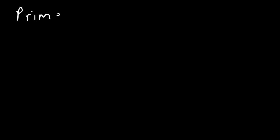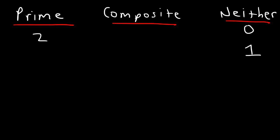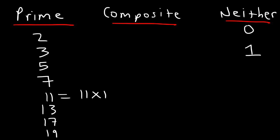Let's make a list of all the prime numbers, composite numbers, and those that are neither. Zero and 1 are neither prime nor composite. Two is a prime number — you can only break 2 down into 1 and itself. Three is prime, so are 5, 7, 11, 13, 17, and 19. The only factors that multiply to any of these numbers are that number and 1.